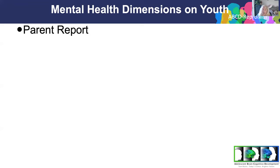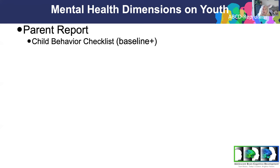We also wanted to look at dimensions of mental health, because categorical present/absent doesn't always capture the full spectrum of mental health challenges. So in terms of parent reporting, at every wave we have parents do the full Child Behavior Checklist (CBCL) — a huge thank you to Tom Achenbach and the ASEBA group for providing all their assessments at no cost to the project. The full CBCL is very rich, over 100 items, giving us dimensional assessments of anxiety, depression, disruptive disorders, and a whole host of things. That's a very important ongoing longitudinal assessment.